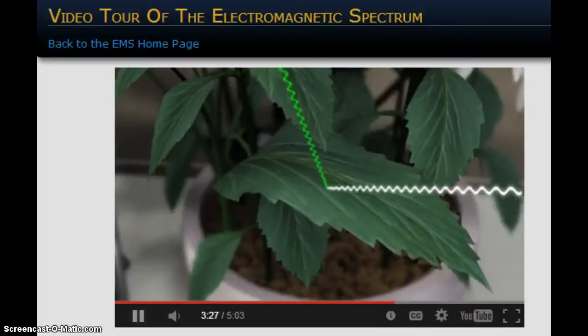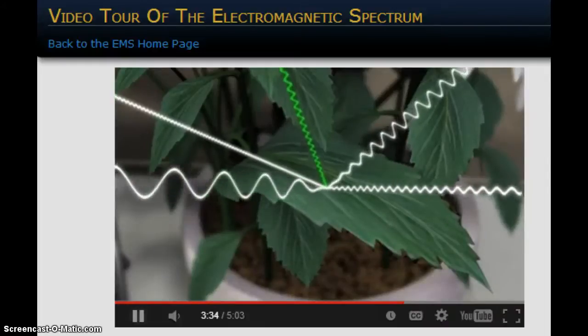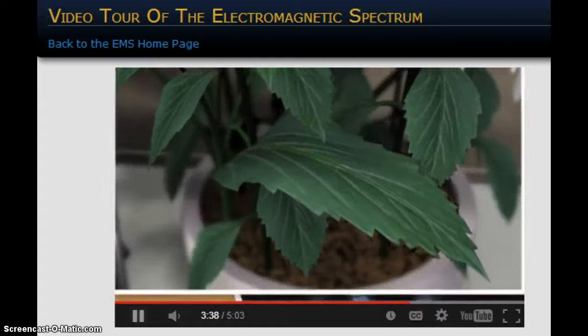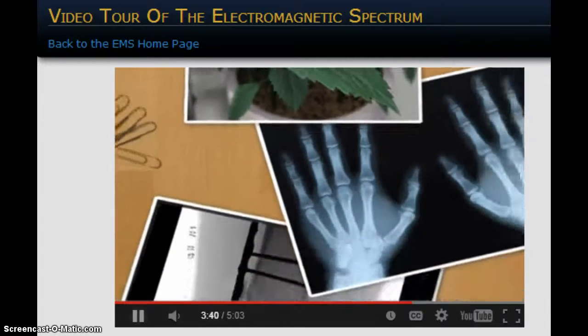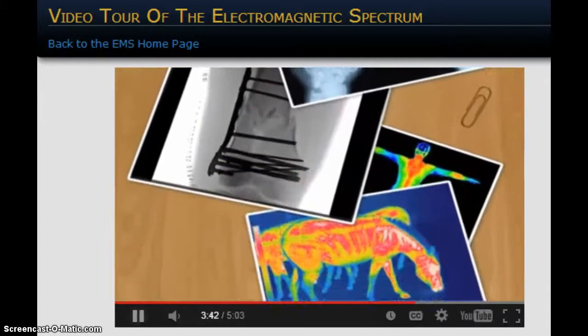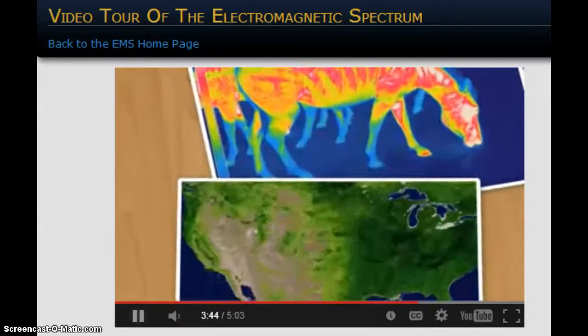Our eyes see the leaf as green, but cannot tell us anything about how the leaf reflects ultraviolet, microwave, or infrared waves. To learn more about the world around us, scientists and engineers have devised ways to enable us to see beyond that sliver of the EM spectrum called visible light.